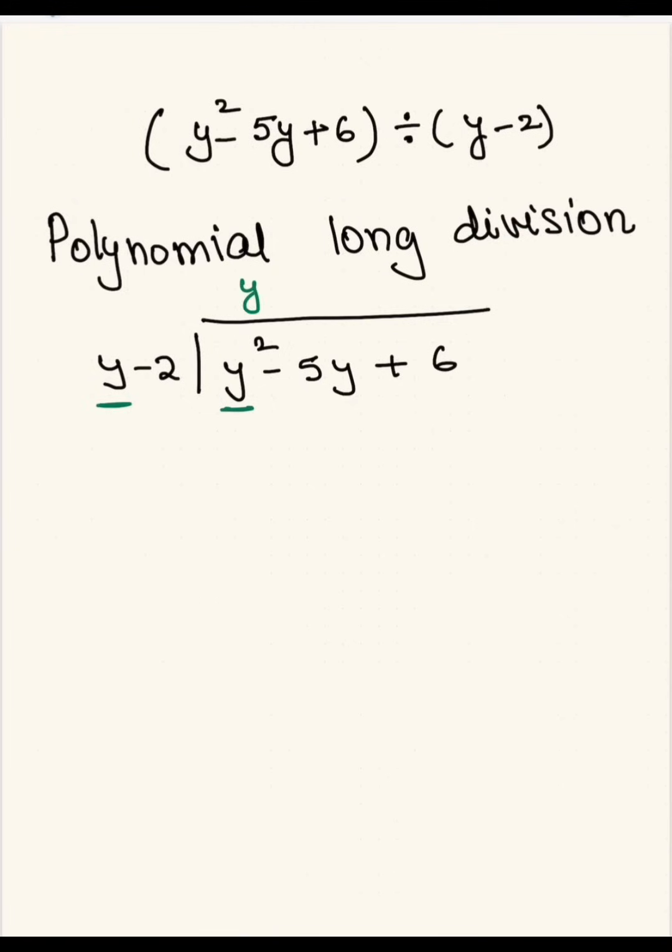So the first thing we want to do here is look at the first term and divide by the first term of your divisor. y squared divided by y, or we can say what should y be multiplied by to get y squared. That would be y.